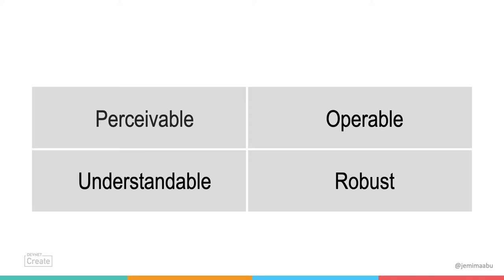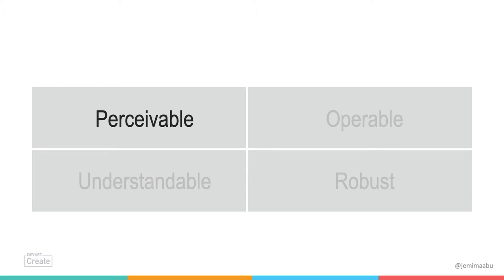These principles are created by the Web Content Accessibility group — the people who are in charge of the World Wide Web. We're going to go into each of them briefly and then the guidelines of each principle. So, what is perceivable? This basically means that the user must be able to perceive your content in more than one sense. If you have a video on your screen, how can people understand what is being shown? They should be able to see the video, but what about people who can't see?